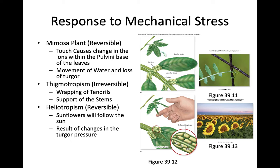You can also have heliotropism, which is reversible — this is when a plant grows in orientation to the sun, involving changes in turgor pressure that allow the plant to rotate. A perfect example is sunflowers: they rotate throughout the day in orientation to where the sun is, which helps them maximize photosynthesis by facing and getting as much photosynthetically active radiation as they can. Mimosa plants also have a reversible touch stimulus involving turgor pressure and specialized pulvini at the base of the leaflets.